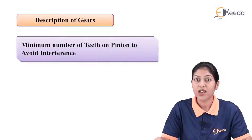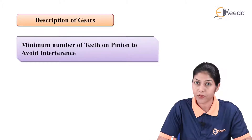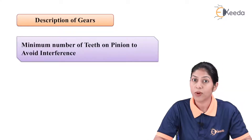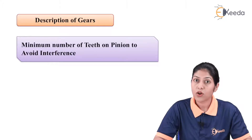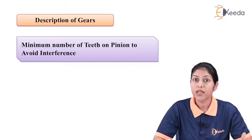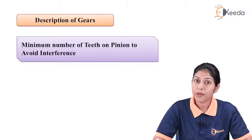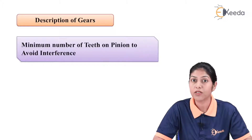Let's start the discussion on how we can define the minimum number of teeth on a pinion to avoid interference. As we know about interference, it occurs when one tooth is cutting the involute profile of another tooth on the mating gear. When two gears are in meshing condition — for example, a pinion and wheel — the tooth of the pinion cuts the involute profile of the wheel tooth when we increase the addendum circle radius of the pinion.